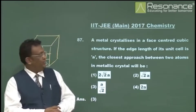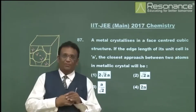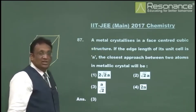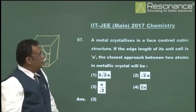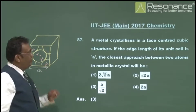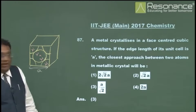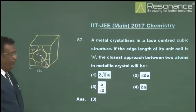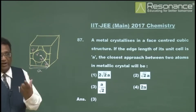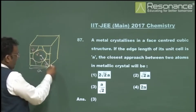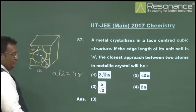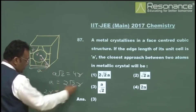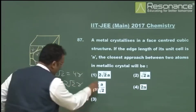Question 87 from solid state: a metal crystallizes in a face-centered cubic structure with edge length a. The distance of closest approach between two atoms is when they are touching. By geometry, the face diagonal is a√2 = 4r, so a = 2√2·r. Therefore 2r = a/√2. The distance of closest approach is a/√2.